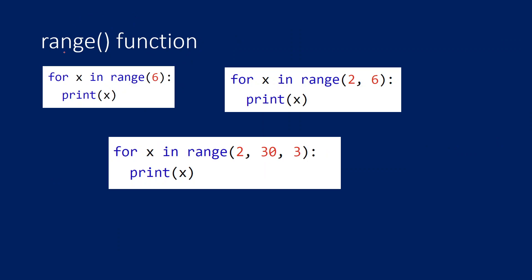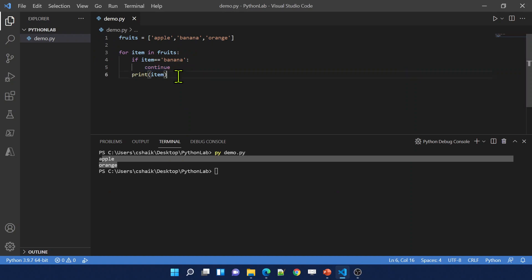The range function gives you a list of numbers based on the value you supply. For example, range(6) gives 0, 1, 2, 3, 4, 5 — 6 is not included. If you don't want to start from 0, you can specify a starting point, like range(2, 6) to get 2, 3, 4, 5. You can also specify an increment value — for example range(2, 30, 3) increments by 3 each time.